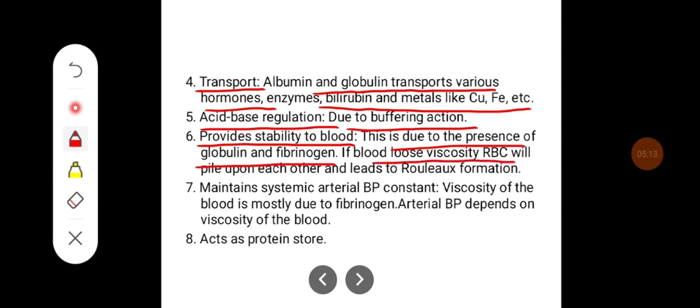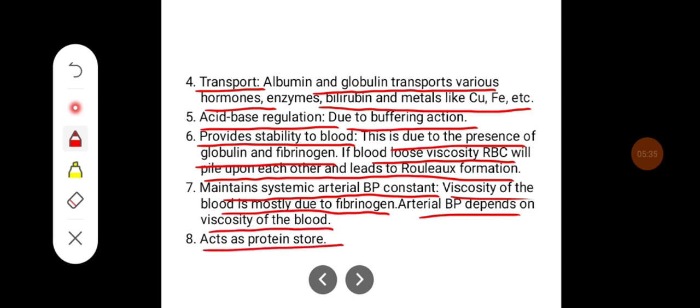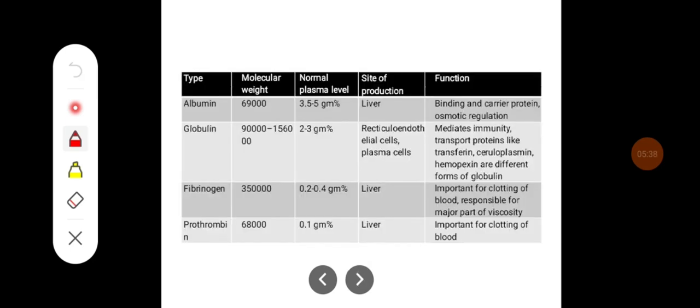If blood loses viscosity, RBCs will pile upon each other and lead to rouleaux formation. Plasma proteins are important for maintenance of systemic arterial blood pressure, as the viscosity of blood is mostly due to fibrinogen, and arterial blood pressure depends on the viscosity of the blood. Plasma proteins act as a protein store.